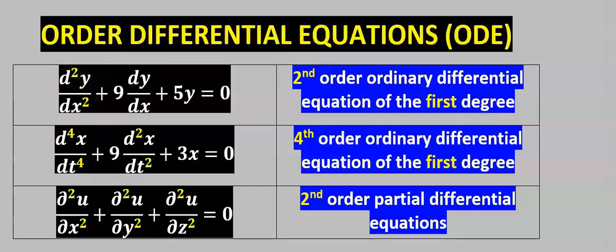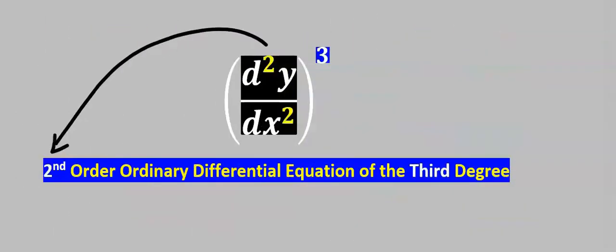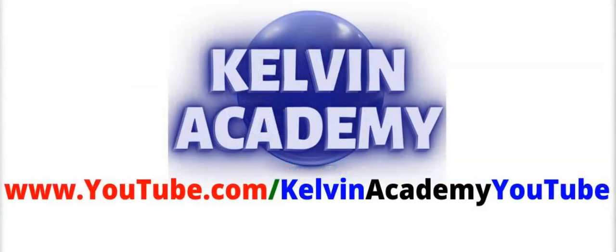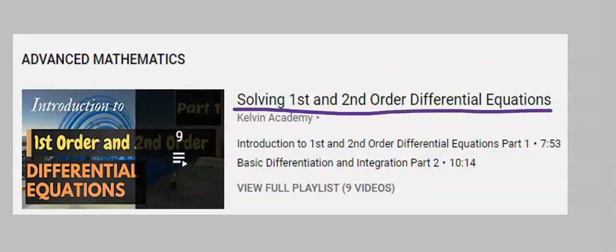Subsequently, for partial differential equations, the d is slightly tilted. If the highest order is 2, this is a second-order differential equation of the third degree. To learn how to solve this higher-level mathematics involving first-order and second-order ordinary differential equations, check out the link and the playlist on solving first and second-order differential equations.